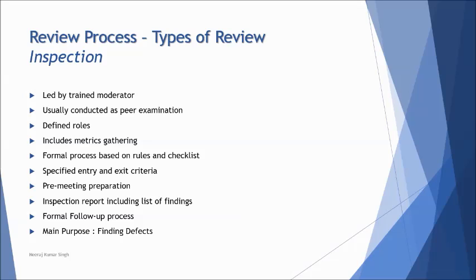The main purpose of inspection is only to find defects. It is completely formal and may be used for critically designed objects, complex applications, or modules. Inspection is the most formal and heavyweight type, involving more cost and more people. The decision on which type of review to use depends on the work product, the static technique being applied, and the criticality of the product. If there is significant risk or complexity involved, a more formal review is recommended.